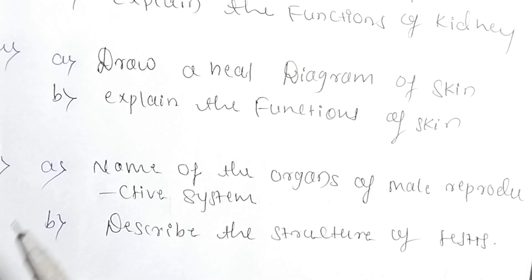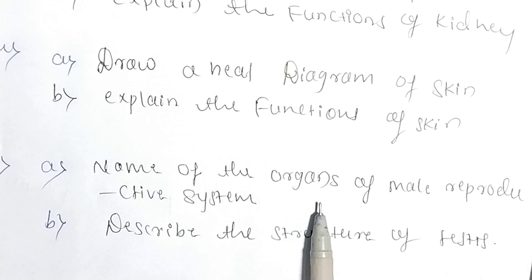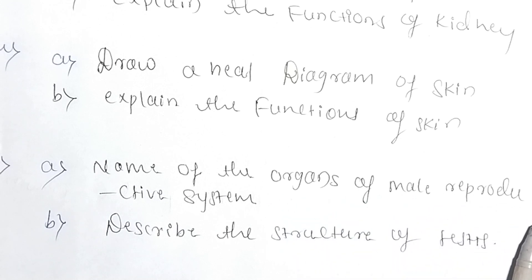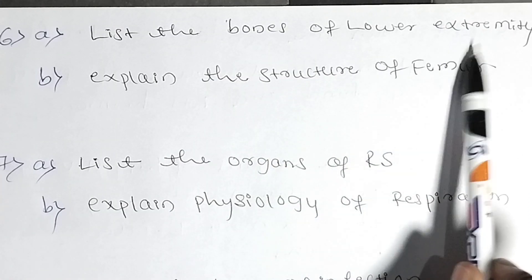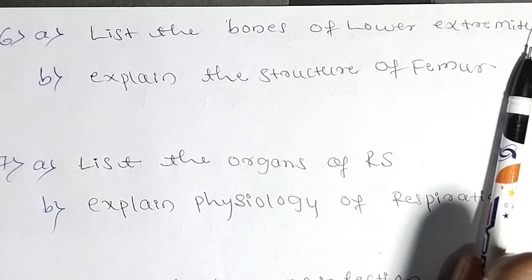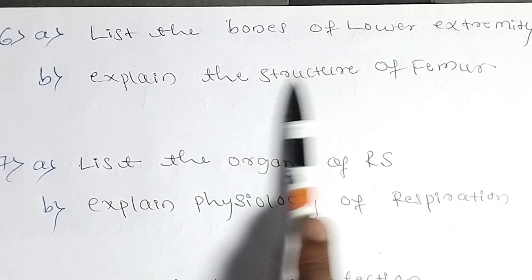The next question is: name the organs of the male reproductive system and describe the structure of the testes — list all the organs related to the male reproductive system and describe the structure of the testes. Next question: list the bones of the lower extremity and explain the structure of the femur.